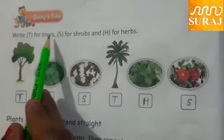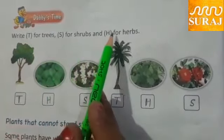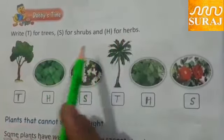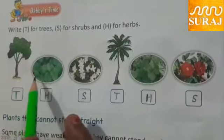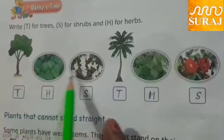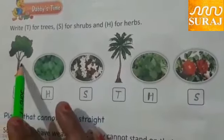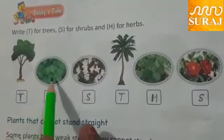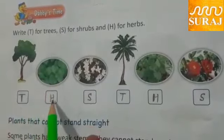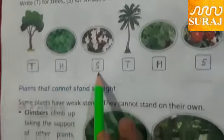Activity: Write T for trees, S for shrubs and H for herbs for the different types of plants.